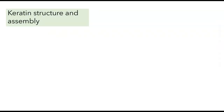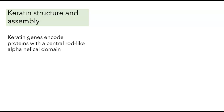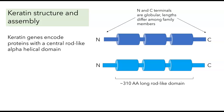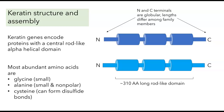Most of what we know about intermediate filament structure and assembly comes from studies of either keratins or vimentins. Keratin genes encode proteins with a central rod-like alpha helical domain about 310 amino acids long, where each cylinder represents an alpha helix. The amino and carboxy terminals are more globular and their lengths can differ. This basic structure is conserved among all members of the intermediate filament family — lamins, vimentins, desmins, and neurofilaments. The amino acids abundant in the rod-like domain include glycine (small), alanine (small and non-polar), and cysteine (which can form disulfide bonds).